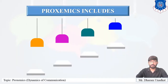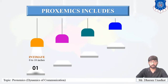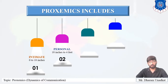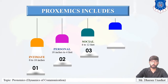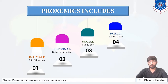Proxemics includes four zones. First is intimate, which covers 0 to 18 inches. Second is personal, from 18 inches to 4 feet. Third is social, from 4 to 12 feet. And last is public, from 12 to 30 feet and above. These are the four types included under proxemics.